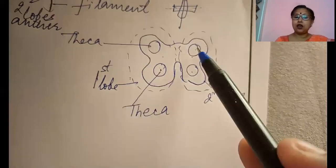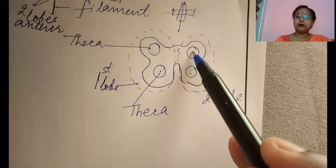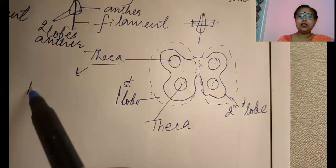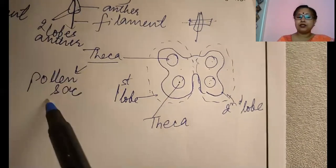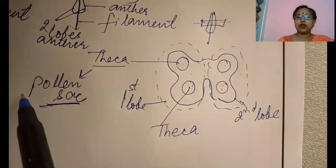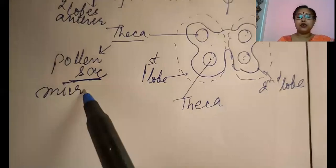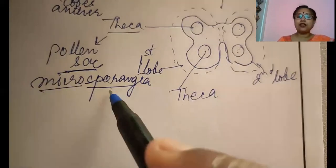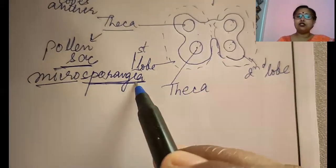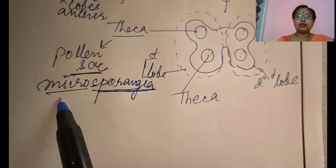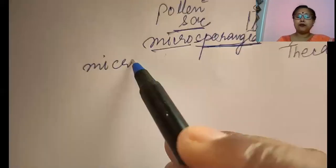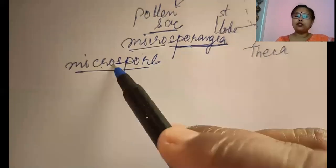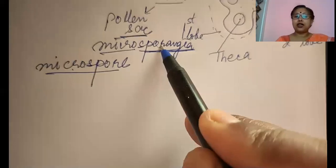Each lobe contains two thecae, that is di-theca, so in total four thecae are there. What this theca basically is: it is pollen sacs — a sac-like body which contains pollen grains. The term we use is microsporangium. Sporangium means spore-carrying structure, a sac which carries spores. Microsporangia is the term used for the pollen sac, and the microspores present in it are the pollen grains.